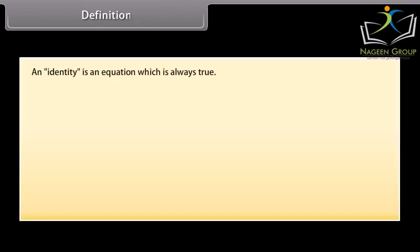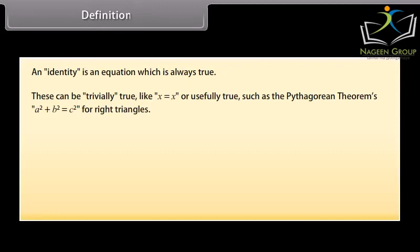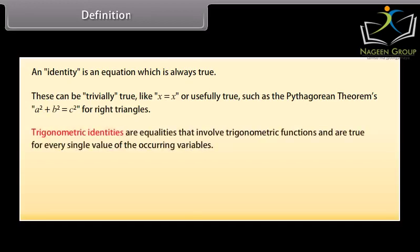Definition: An identity is an equation which is always true. These can be trivially true, like X is equal to X, or usefully true, such as the Pythagorean theorem: A square plus B square is equal to C square, for right triangles.